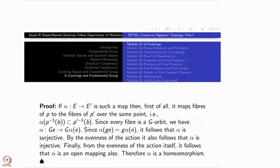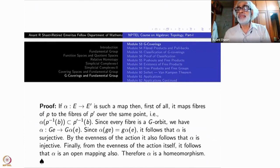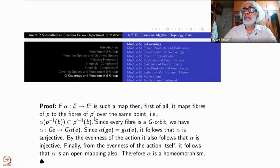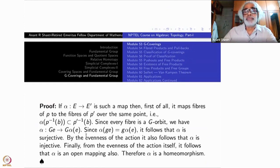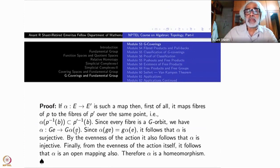Take α to be such a map, meaning it is a G-map. As we have seen, once it is a G-map, it sends fibers to fibers, because P' composite α equals P. So P' inverse of b contains α of P inverse of b. Every fiber is an orbit for both E and E'. We have α mapping G·e to G·α(e). It follows that α is surjective — every point in E' is G·α(something).